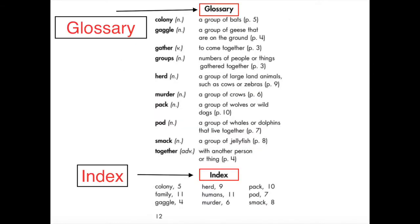The glossary helps readers understand what words mean. And the index is a list of ideas that are in this book and the page number where you can find them.